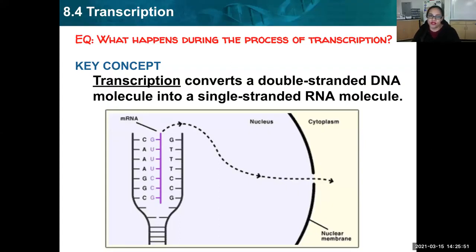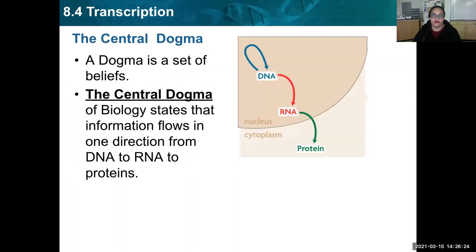Transcription converts a double-stranded DNA molecule into a single-stranded RNA molecule. Both DNA and RNA — the NA stands for nucleic acid. We went over DNA in depth last week, and we're going to go over RNA a little more this week. The central dogma — a dogma is a set of beliefs.